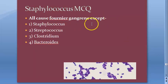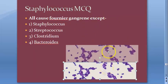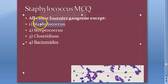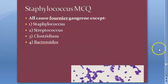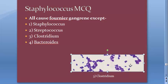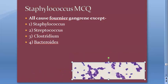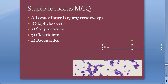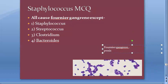All cause Fournier's gangrene except — the answer is clostridium. That means staphylococcus causes some Fournier's gangrene. Fournier's gangrene is seen in the scrotum, testis, and penis area. Clostridium causes gas gangrene but apparently does not cause Fournier's gangrene.